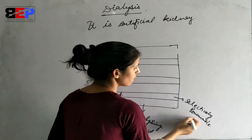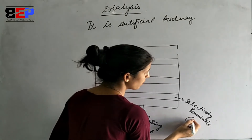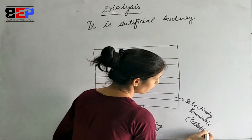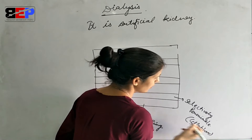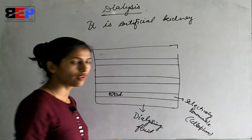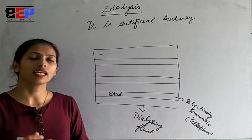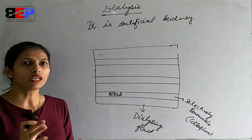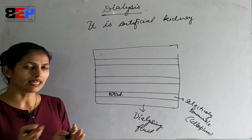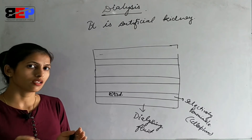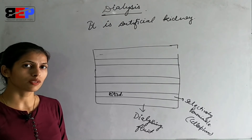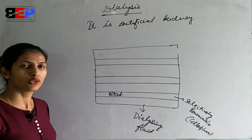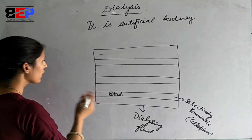These tubes are made of a selectively permeable material called cellophane. Cellophane is a selectively permeable substance which only allows certain substances to pass from the blood into the dialyzing solution.